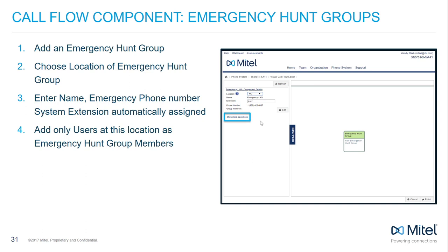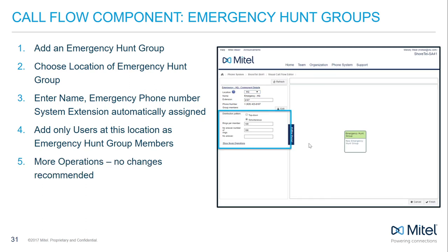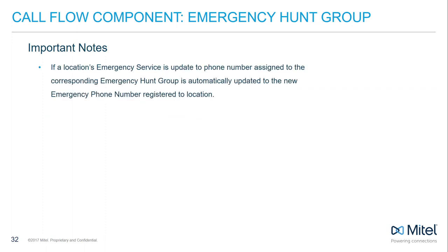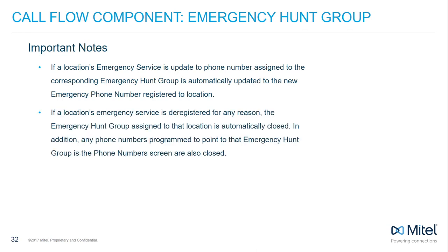Note that the purpose of an emergency hunt group is to allow emergency services to easily return emergency calls by reaching the emergency hunt group members for follow-up, so the default settings are configured as such. Altering these defaults may make it difficult or prevent emergency services from responding to an on-site hunt group member. If a location's emergency service number is updated or deregistered, the emergency hunt group assigned to the location is automatically updated or closed accordingly.